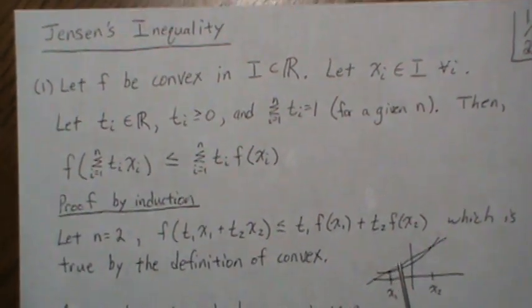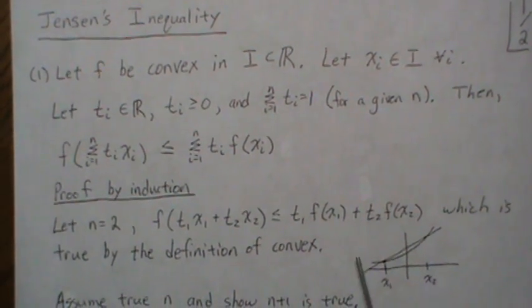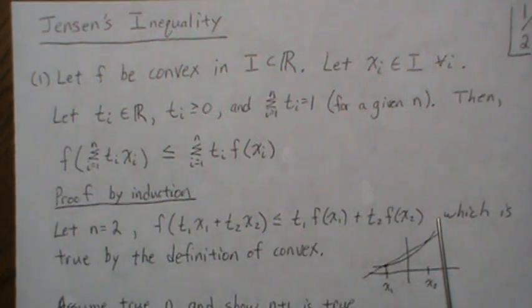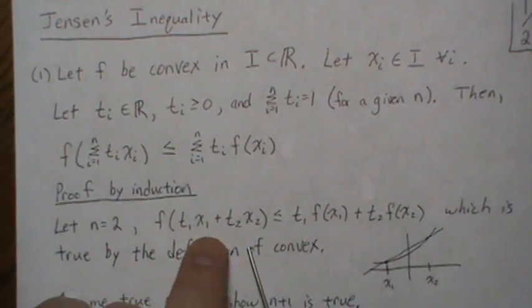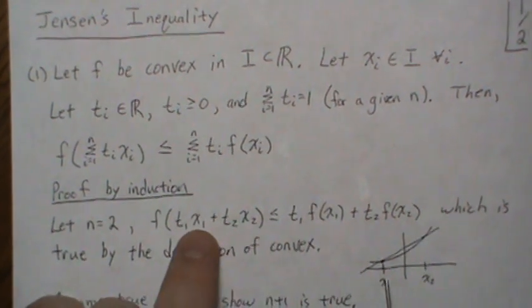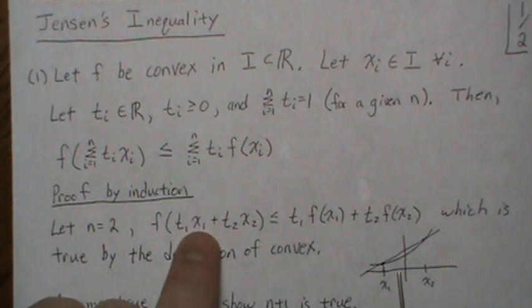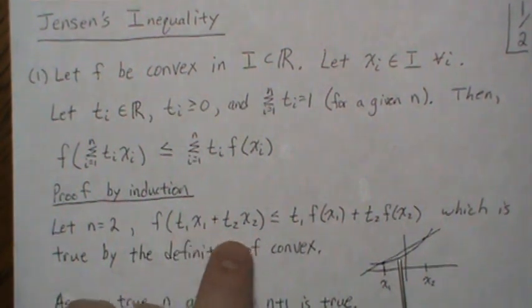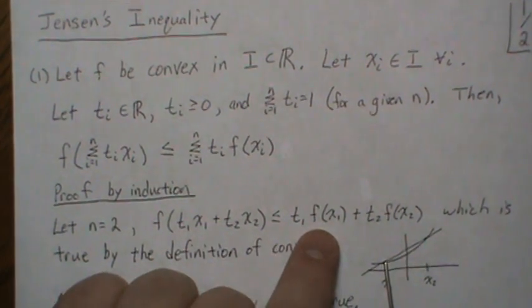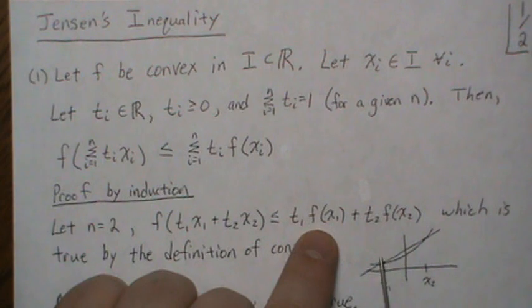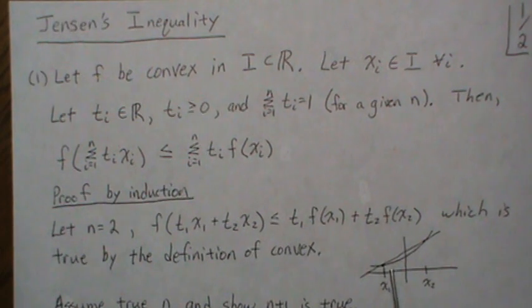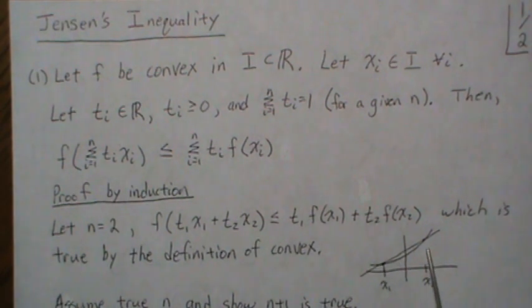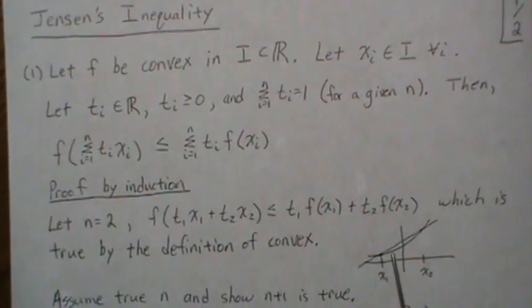Graphically, if we have x1 and x2 on a convex function, we draw the line connecting the two points. F of the convex combination picks some point in between x1 and x2, and the line is always going to be bigger than or equal to F at that point — that's the definition of convex functions. There's also the definition using tangent lines where the function is always above any tangent line.